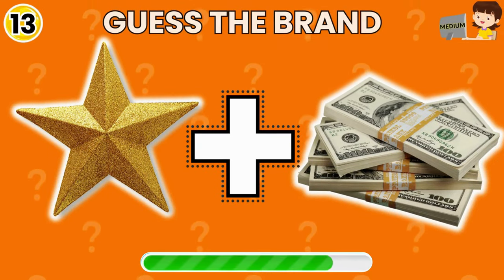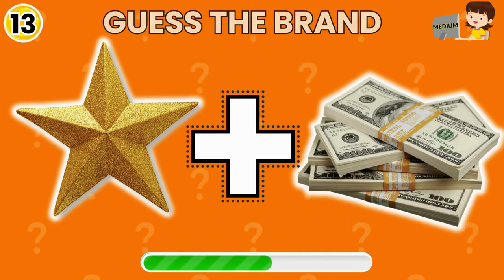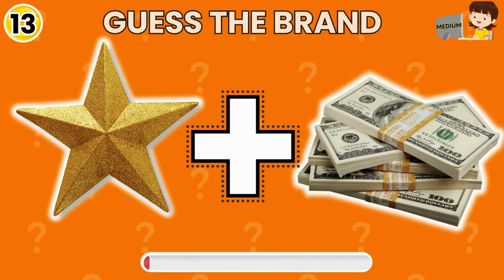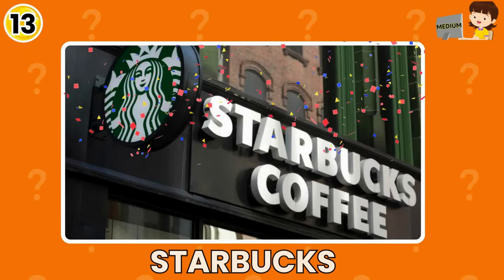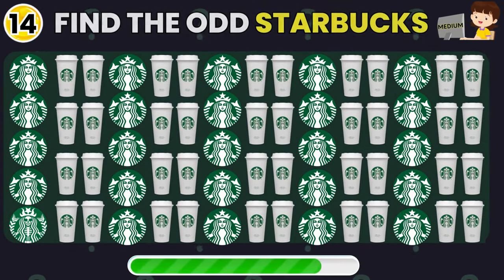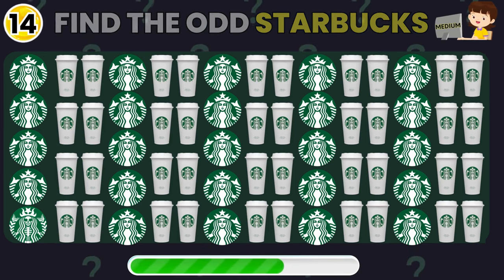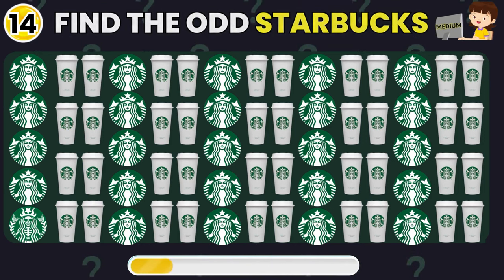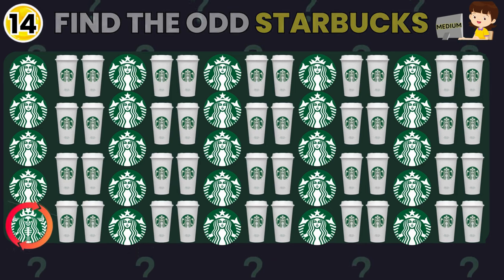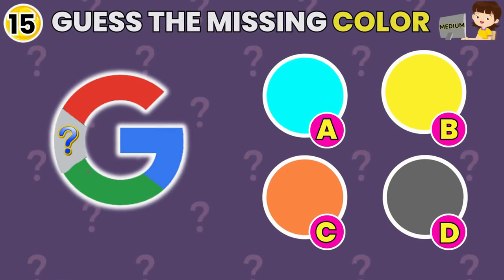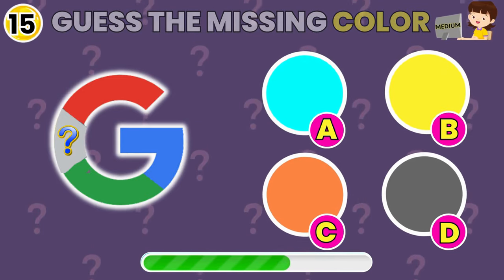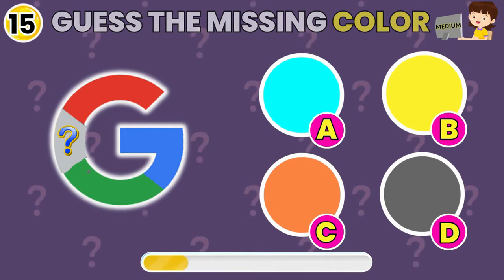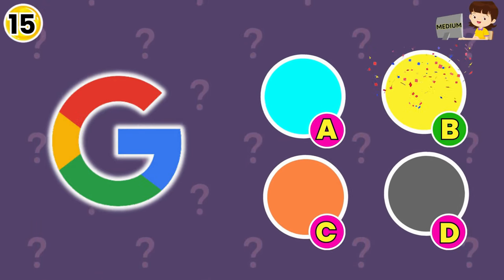Guess the brand by Emoji. Yes, it's Starbucks! Can you find the odd Starbucks here? Yeah, this one is different. Can you guess the missing color? B is the correct answer and it's yellow.